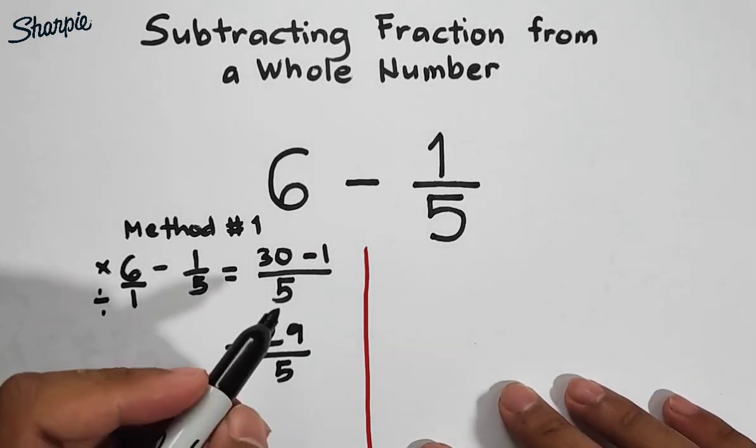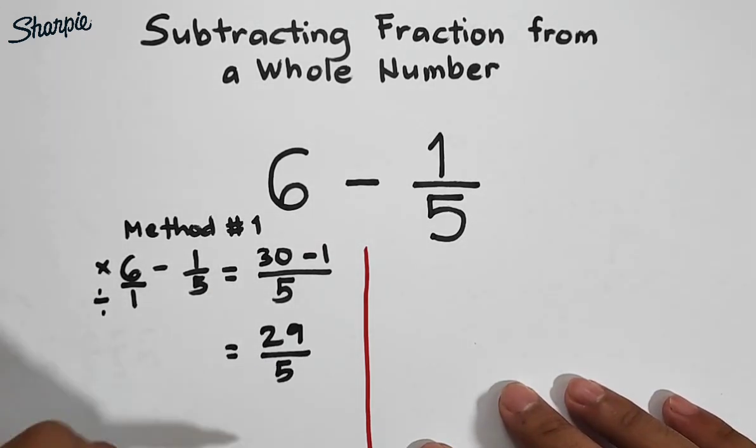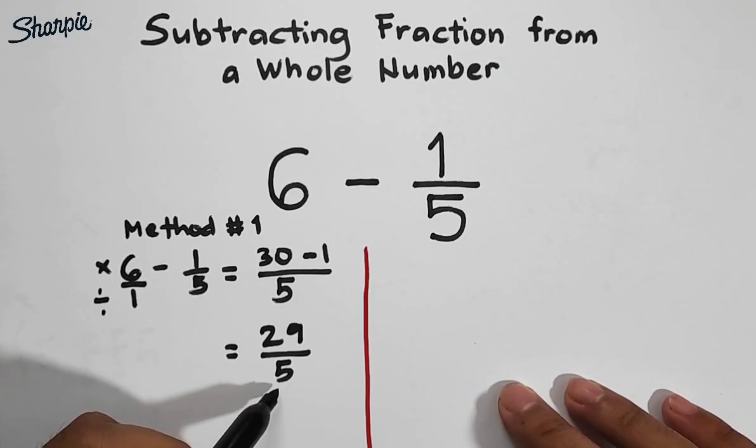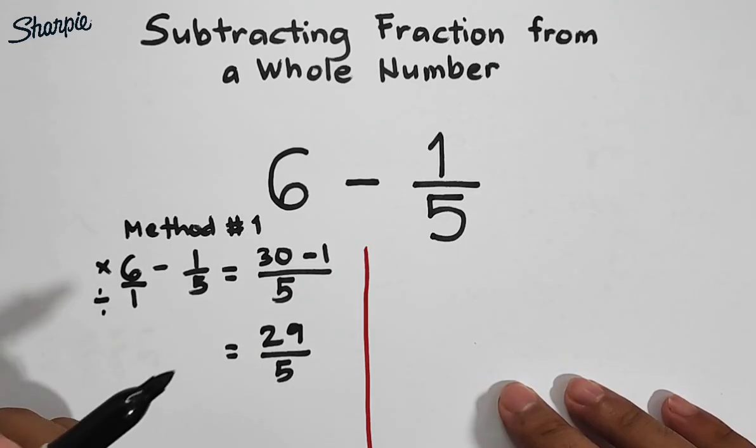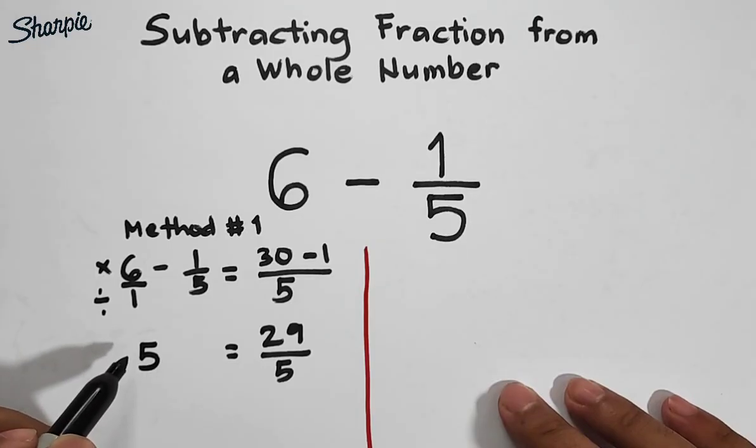But in case your teacher asks you to convert this into a mixed number, here's how. 29 divided by 5: how many 5s do we have in 29? We have 5. So that will be the whole number of your mixed number.